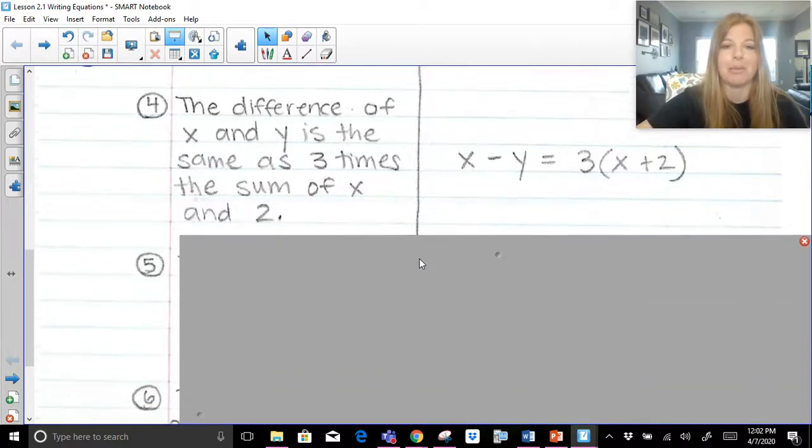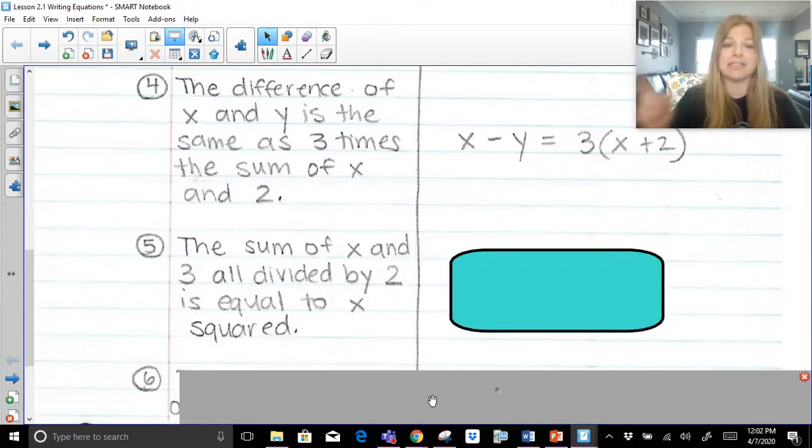All right, a couple more. The sum of x and 3, all divided by 2. So think about that. How would I set that up? We know division is going to be a fraction. We're going to set it up as a fraction. We're not going to use the division symbol. The sum of x and 3, all divided by 2.